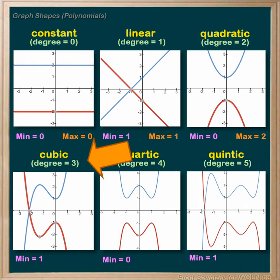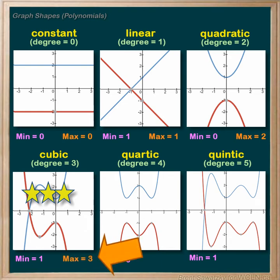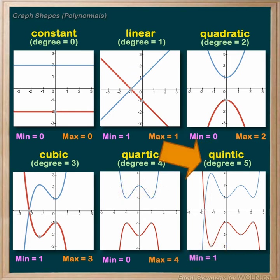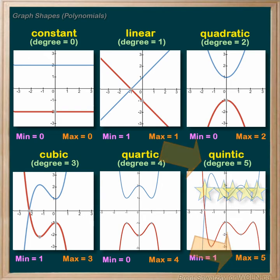Degree three, the cubic, would have two bumps or changes in direction, and therefore could cross the x-axis up to three times — a maximum of three x-intercepts. Degree four, the quartic, has a maximum of four x-intercepts. Degree five, the quintic, has a maximum of five x-intercepts. So you probably see the trend: the maximum number of x-intercepts in a polynomial relationship equals the degree of that relationship.